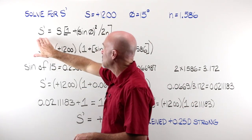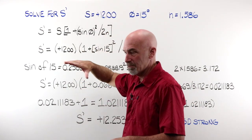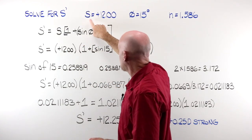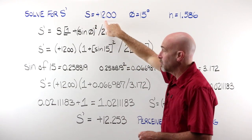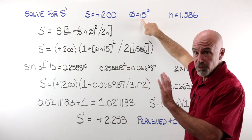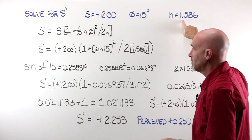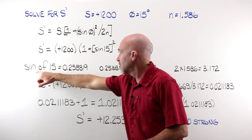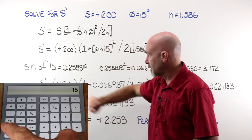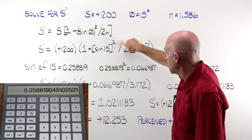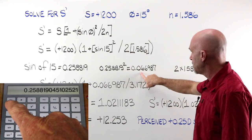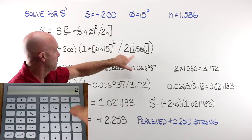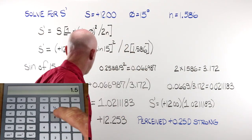We're solving for our new spherical power, the perceived power of the lens once we tilt it. We need our original sphere power, which is our plus 12. We need the degrees of movement of the lens and we need our index of refraction. But if we work this through, we plug in our 15 and hit our sign button, we end up there. If we square that, we end up here. This tells us that we need to multiply our index of refraction times two, which gives us the 3.17.